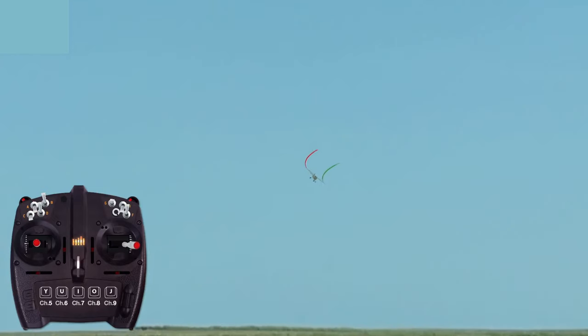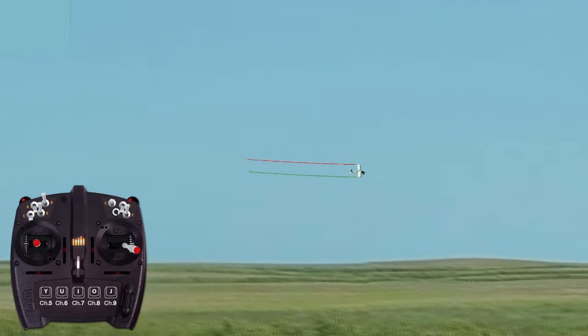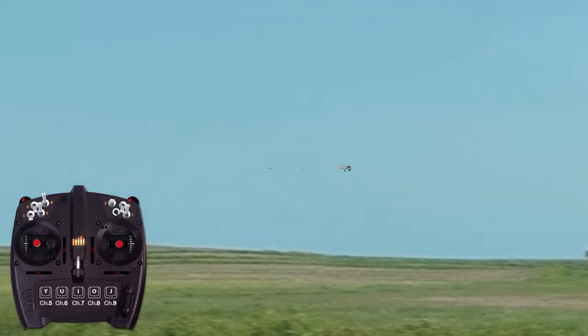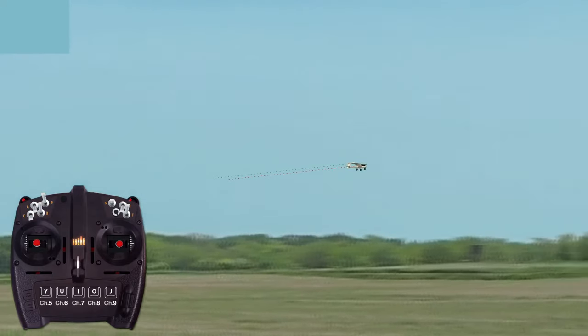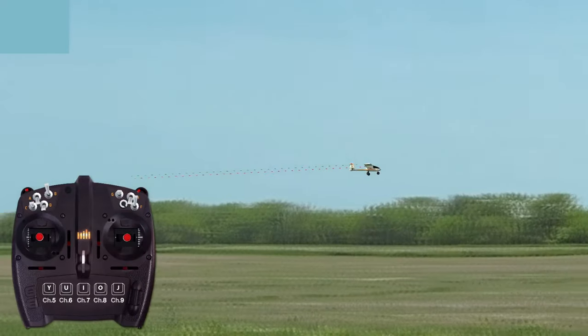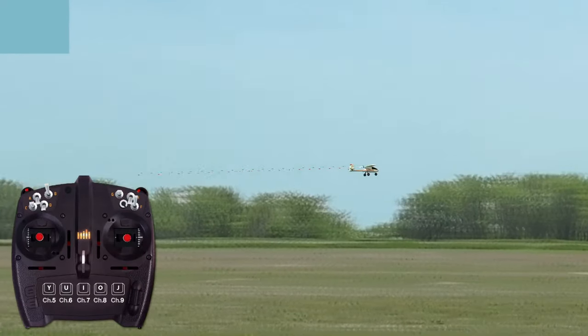In safe mode, the airplane is essentially steered around the sky like a car. However, the pilot holds the aileron control stick in the direction that he or she wants the plane to go. The amount of aileron applied determines the degree of bank, and therefore how wide or tight the turn is.